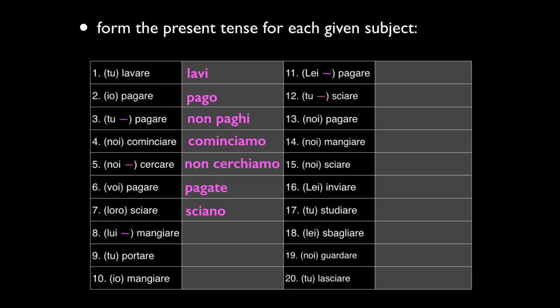Number seven is LORO SCIANO. Number eight is NON MANGIA. Number nine is TU PORTI. Number ten is IO MANGIO. Number eleven is LEI NON PAGA — that's the formal Lei form; notice the capital L, though it could also be 'she' at the start of a sentence. Number twelve is TU NON SCII — because SCIO has the emphasis on the I, you have to add a double I. Number thirteen is PAGHIAMO — add the H to conserve the G.